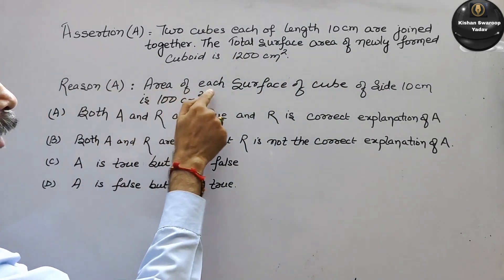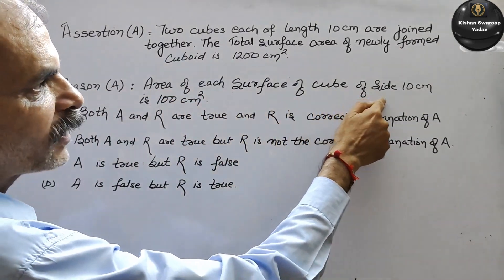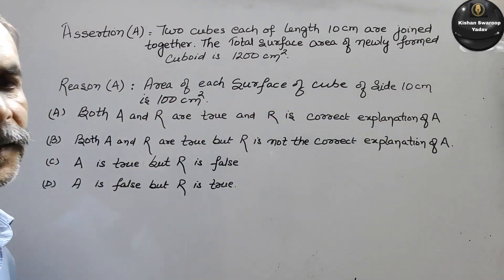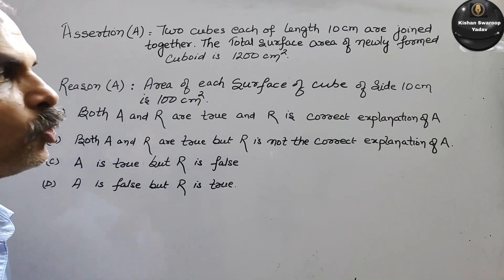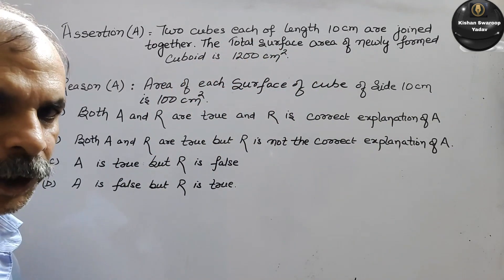Reason - Area of each surface of cube of side 10 cm is 100 cm². So you have to solve this.